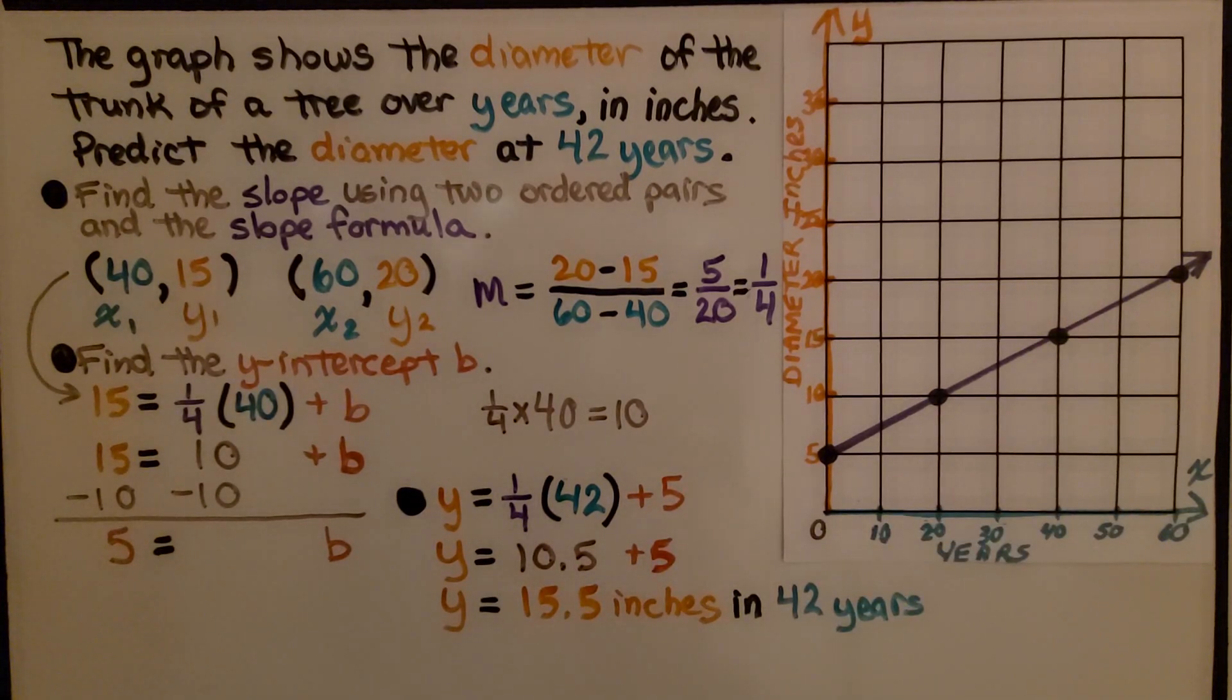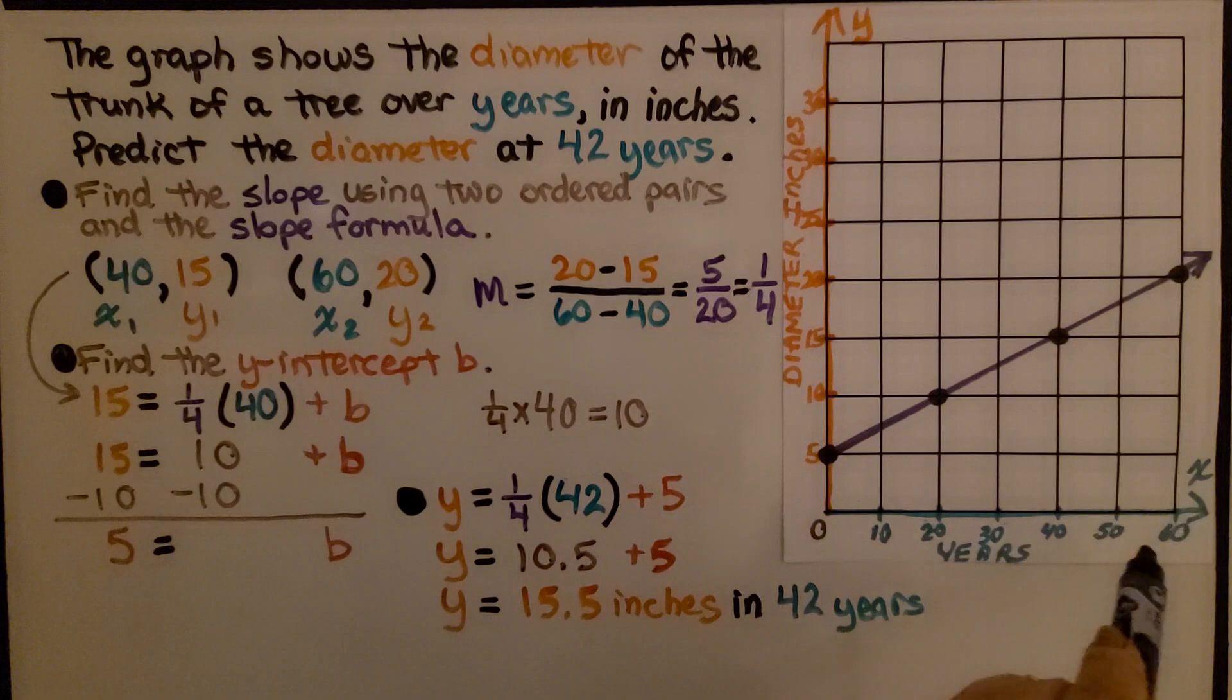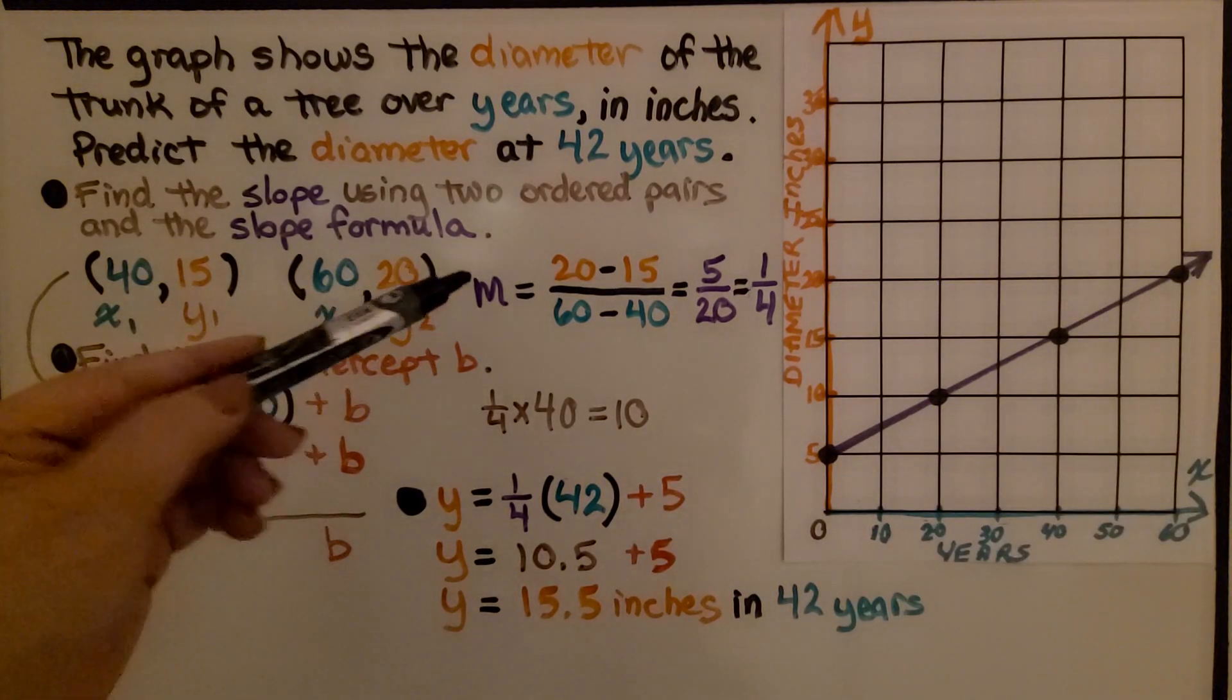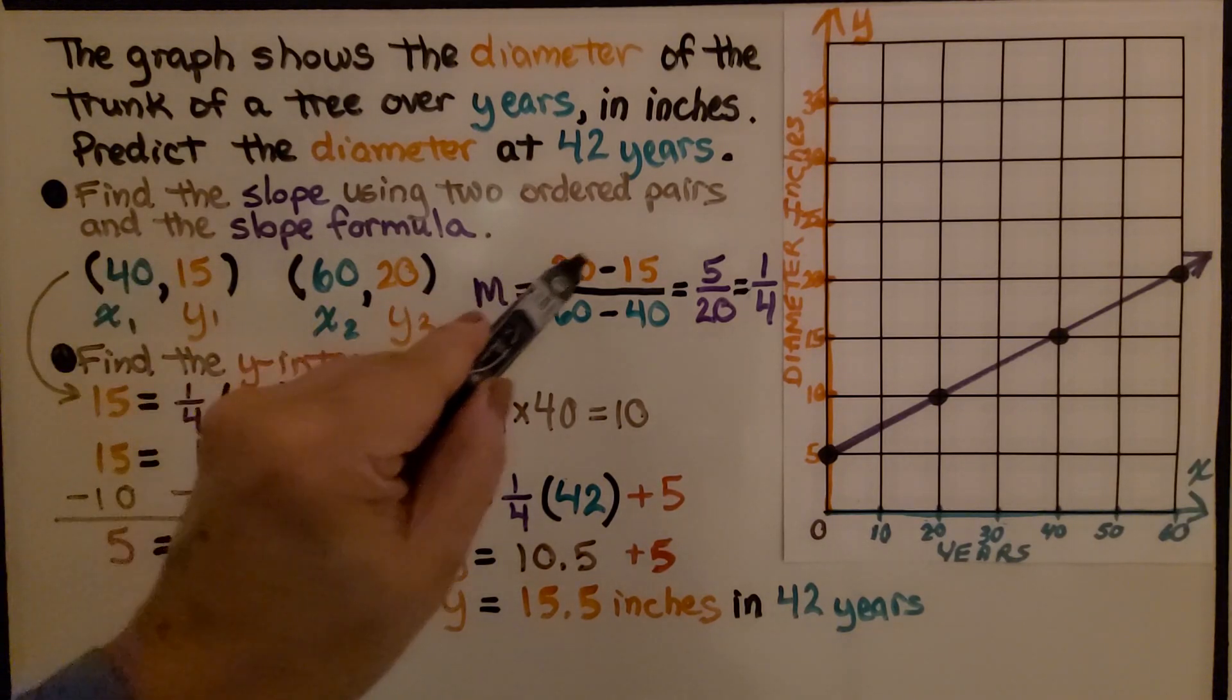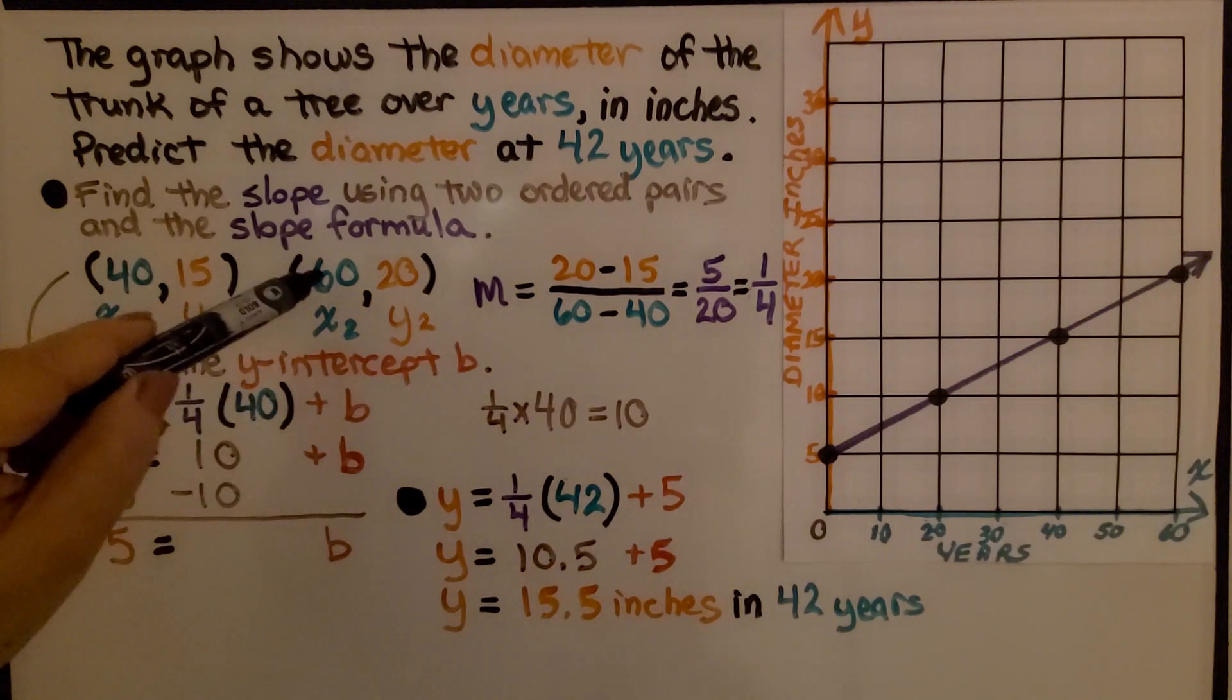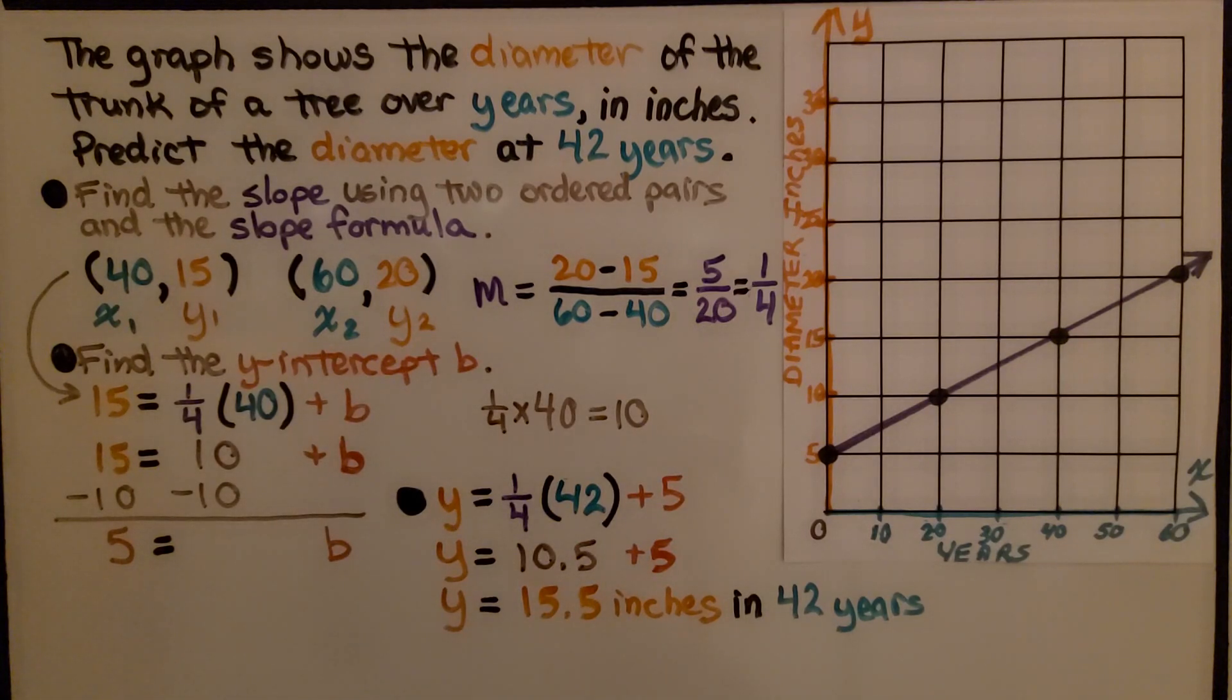To find the slope, we use two ordered pairs and the slope formula. We can use (40, 15) and (60, 20). We do the y sub 2 value minus the y sub 1 value. So we have 20 minus 15, that's the second y minus the first y. That gives us 5. And when we do the second x value minus the first x value, we get 20. Our slope is 5/20, which simplifies to 1/4. So now we have our slope m.